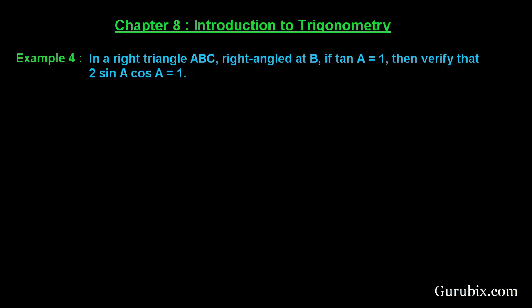Welcome friends, let us solve example number 4 of chapter 8. The example says: in a right triangle ABC right-angled at B, if tan A is equal to 1, then verify that 2 sin A cos A is equal to 1.